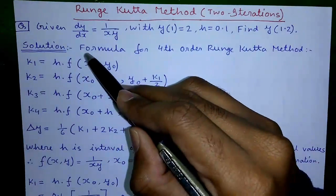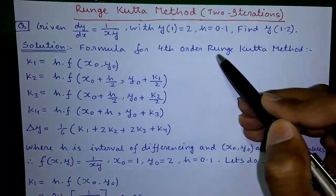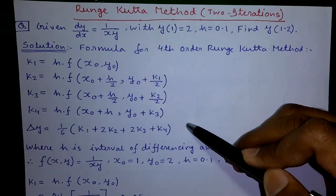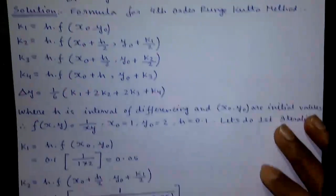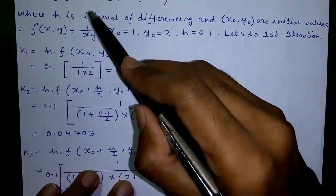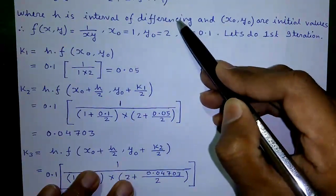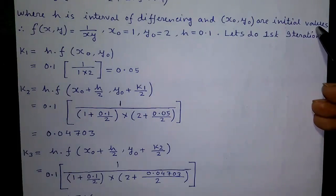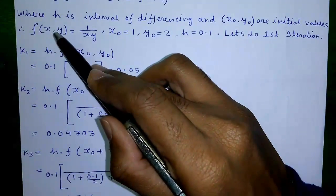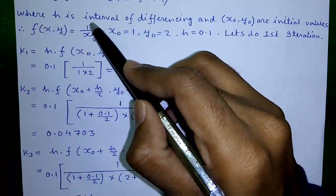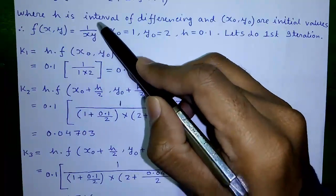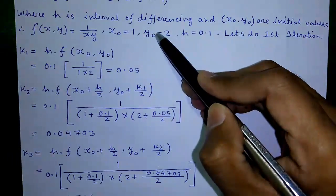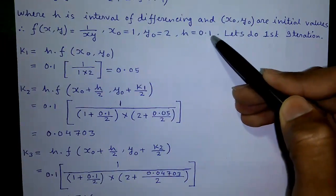Let us proceed to the solution. The formula for the fourth order Runge-Kutta method is given below — note it down. Here h is the interval of differencing and x0, y0 are the initial values. So f(x, y) equals 1/(xy), as given in the question. x0 equals 1, y0 equals 2, and h equals 0.1.